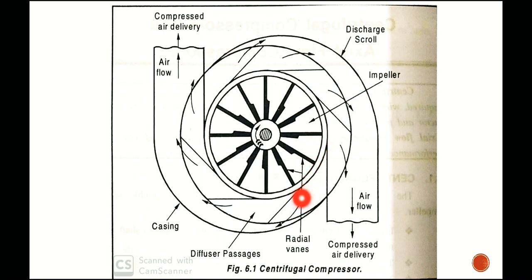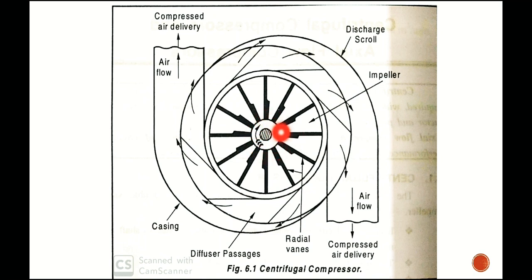The diffuser converts high velocity into high pressure. The air exiting the diffuser has very low velocity and very high pressure. When the pressure is raised above atmospheric, the air can be delivered. Half the pressure rise is achieved by the impeller and the remaining half is achieved by the diffuser.